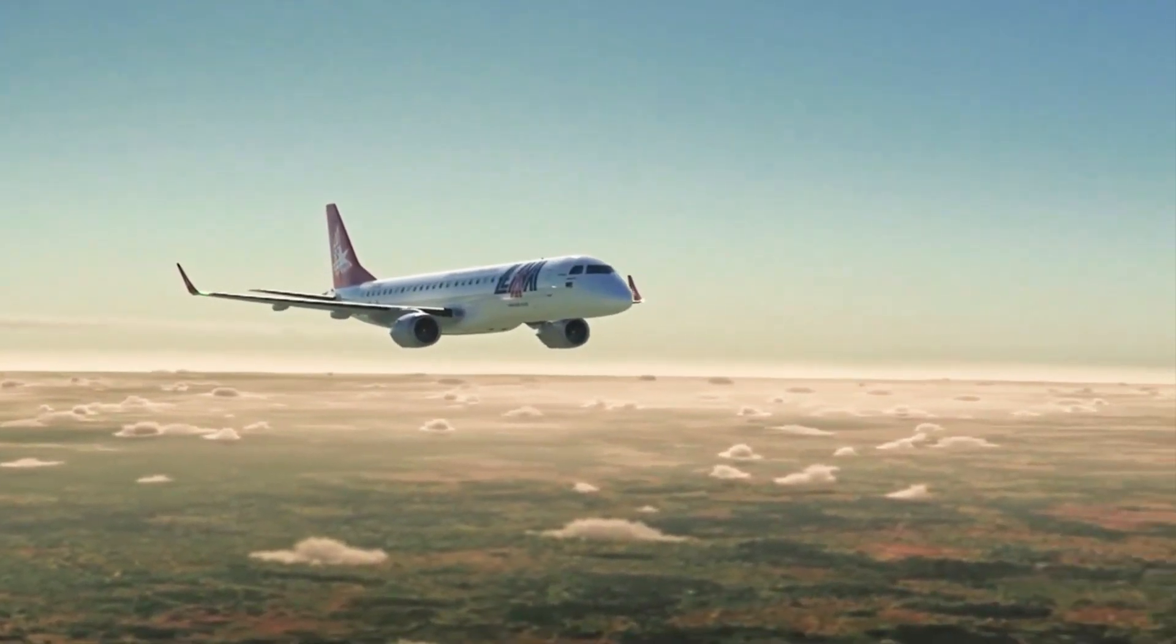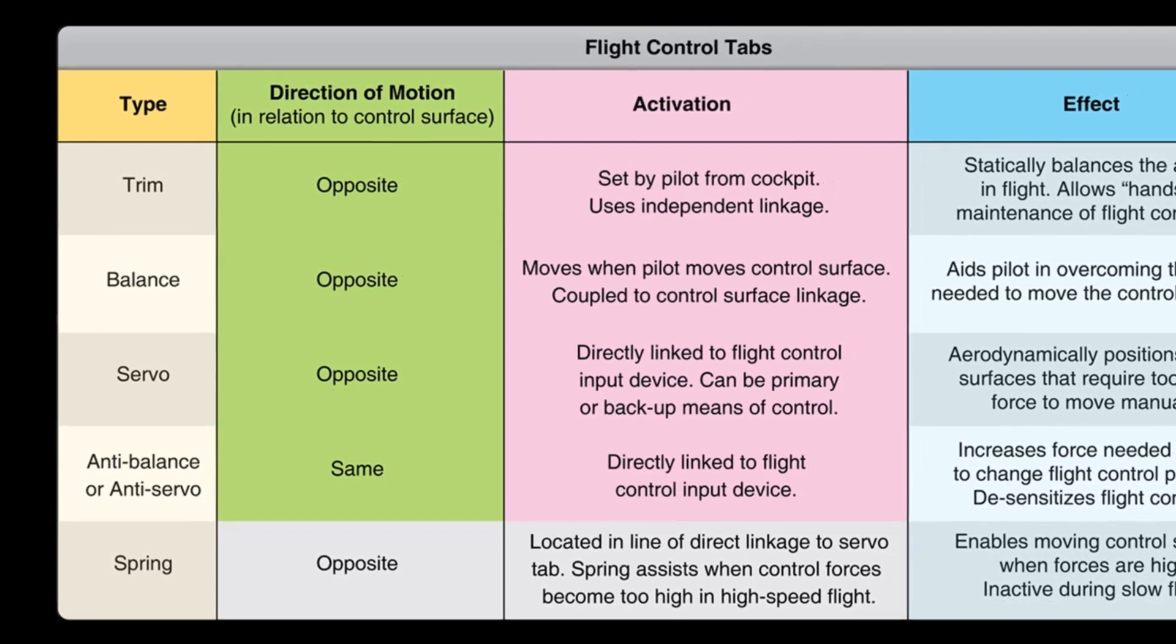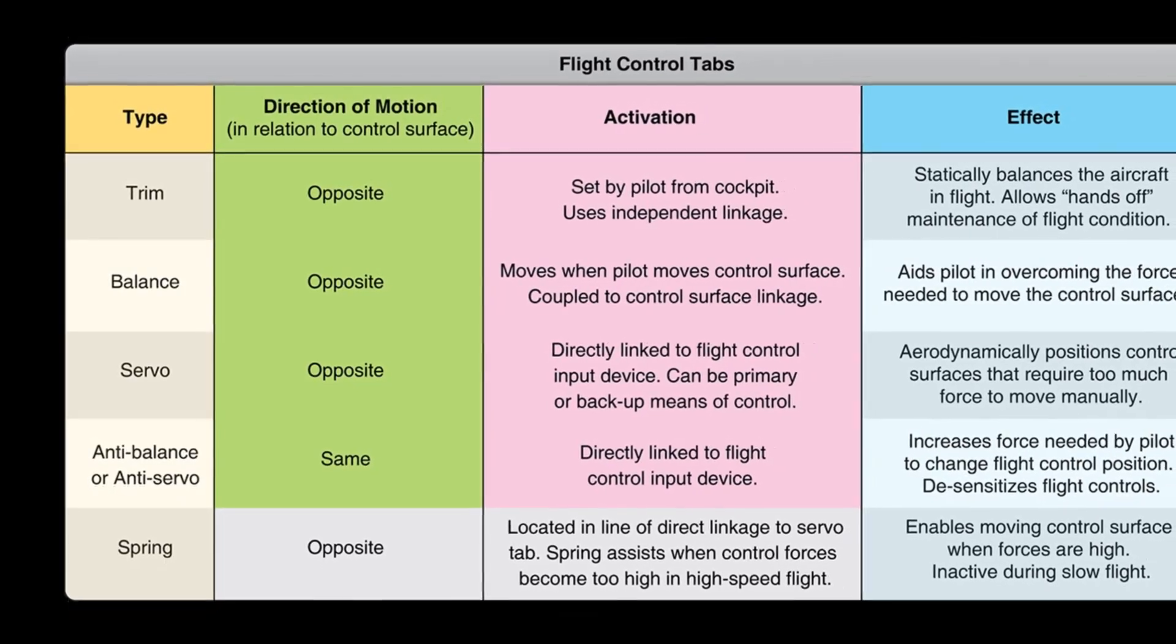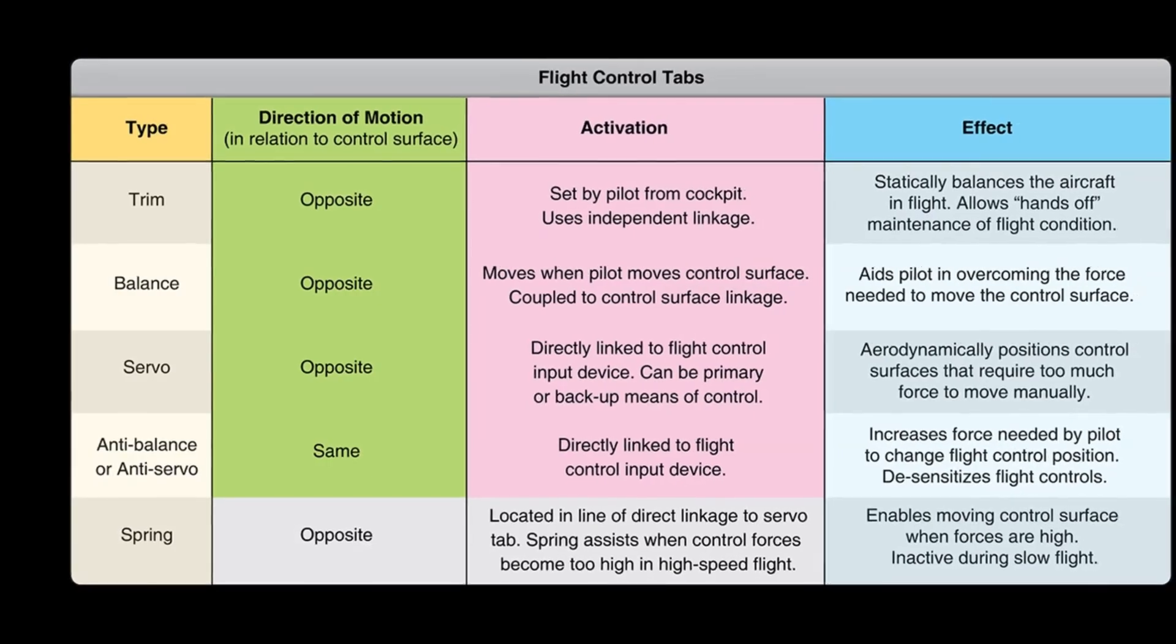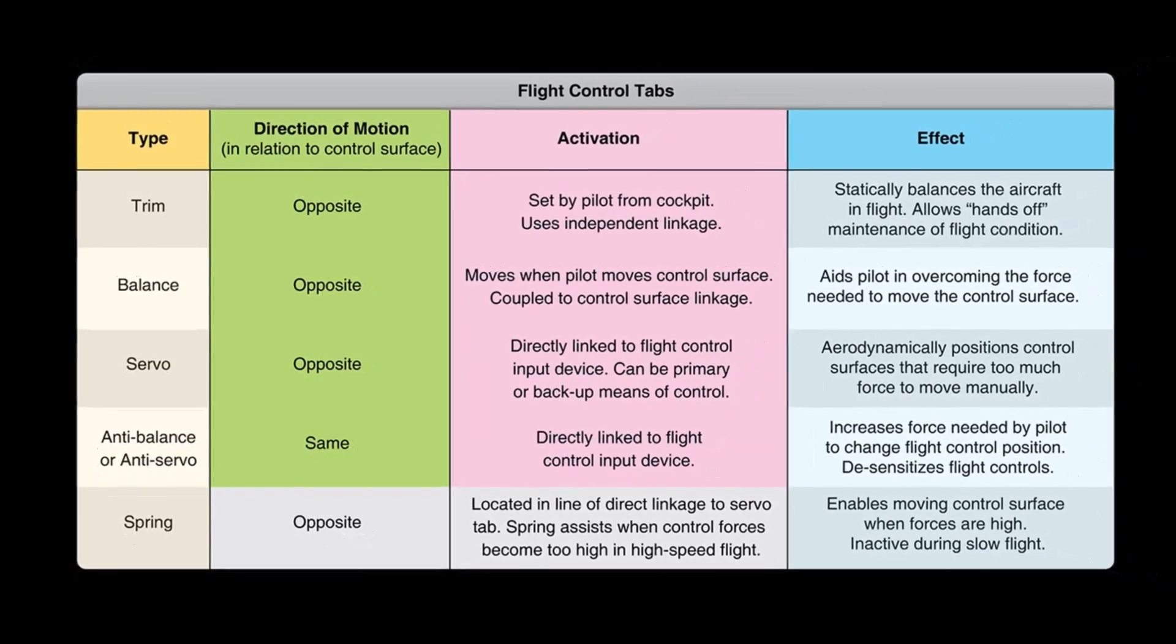The force of the air against a control surface during the high speed of flight can make it difficult to move and hold that control surface in the deflected position. A control surface might also be too sensitive for similar reasons. Several different tabs are used to aid with these types of problems. Let's take a closer look at the various tabs and their uses.